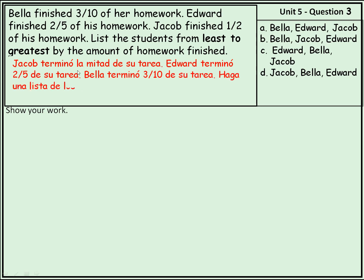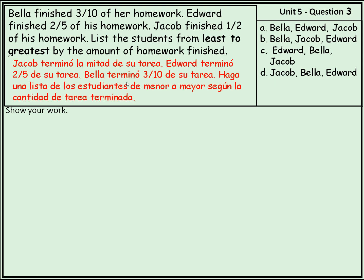Jacob terminó la mitad de su tarea. Edward terminó dos quintos de su tarea. Bella terminó tres décimos de su tarea. Haga una lista de los estudiantes de menor a mayor según la cantidad de tarea terminada.